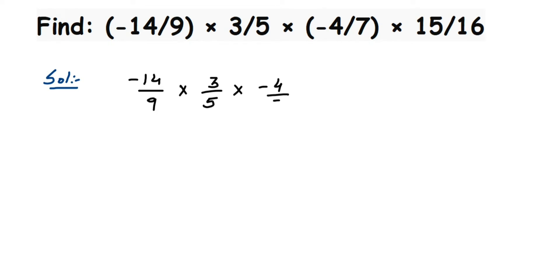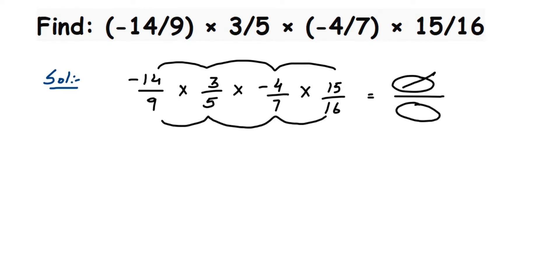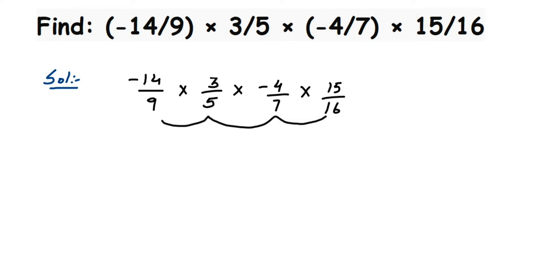There are many ways to solve this. One way is to multiply all the numerators together to get one numerator, then multiply all the denominators, write the answer, and then cancel numbers to bring it to reduced form. The problem with that approach is the numbers you get from multiplying will be quite large.